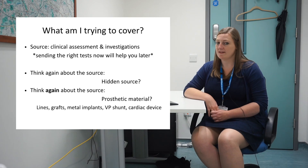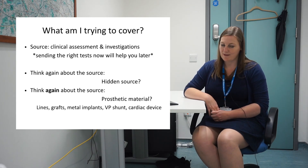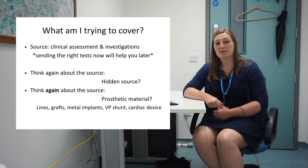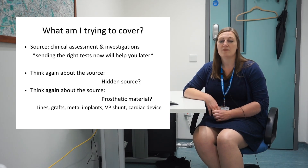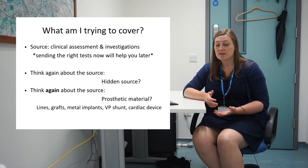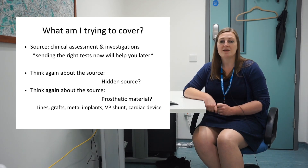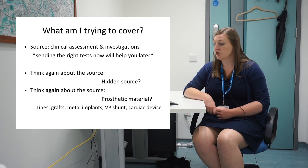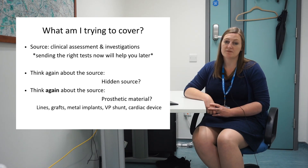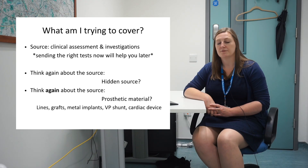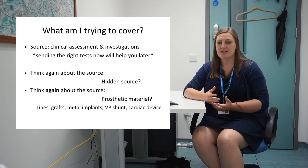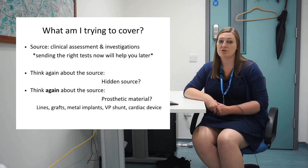Once you've thought again about your source, I'd encourage you to think a third time and consider whether there is any prosthetic material. This could be a long line such as a Hickman line or a Tenckhoff line in dialysis patients. Have they had a recent or previous aortic graft? Do they have any metal implants in their joints, a VP shunt, or a cardiac device such as a pacemaker or a prosthetic valve? Knowing whether they have prosthetic material is important because it may change the antibiotics you want to give.